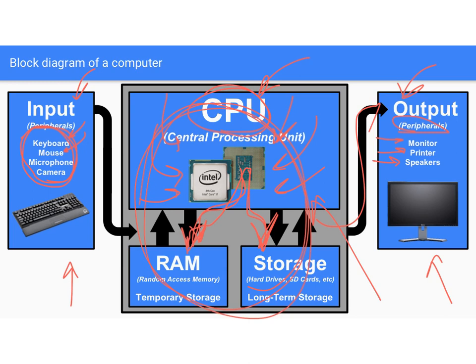I'm using the term 'computer' loosely here. This is an important diagram to have a big-picture understanding of, but you don't need to know in excruciating detail how a computer works. Your phone in your pocket is a computer — it meets all the criteria on the screen. Even your iPad that the school provided meets all of the criteria as well.